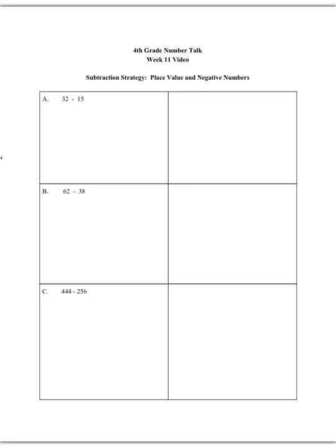We will start now. So with place value and negative numbers, you first remember expanded form. So we say 30 plus 2 is the same as 32.